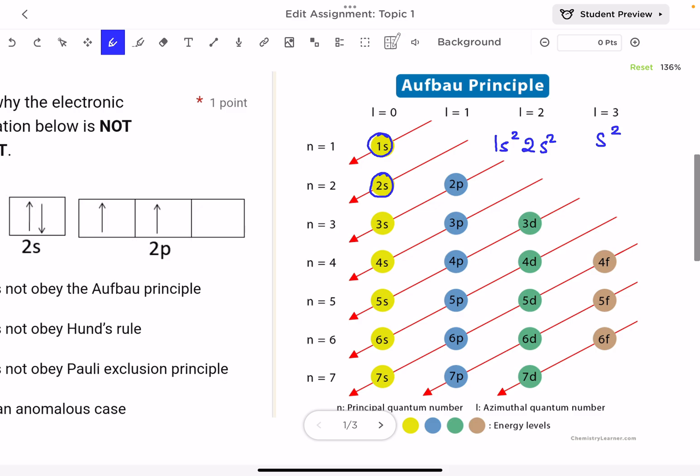Then next, I always follow the arrow. The arrow starts here, so my next is 2p. Now, the p can maximum contain six electrons. If I have more, I continue to 3s2. If I have more, I continue to 3p6, 4s2, and so on.